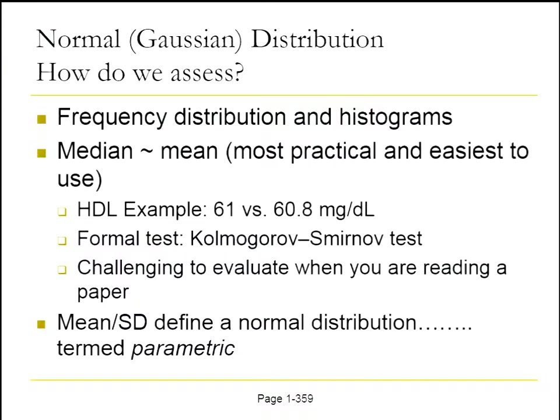Just like clearance and volume of distribution define the pharmacokinetics of a drug and what its profile looks like, the mean and the standard deviation are parameters that describe your data set. Which is why we call them parametric tests — because they have some underlying parameters that describe their distribution.